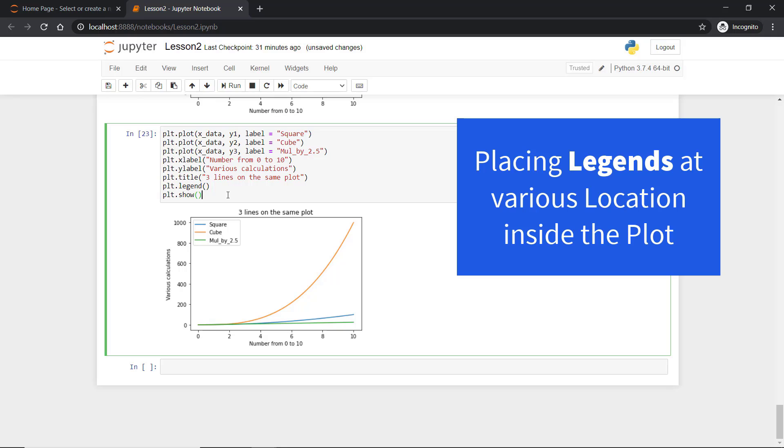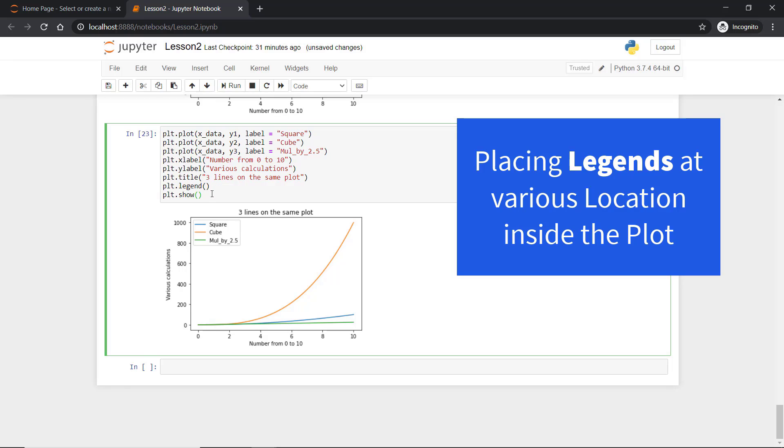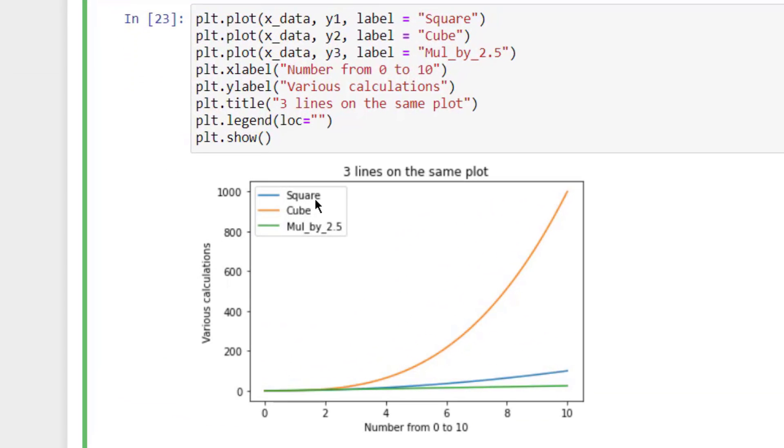Now one more thing that you can do with the legend is you can also change with the position. Let's say I wanted to plot this legend to the center. So we can pass it as a location loc equal to center. Now this legend will be displayed at the center. So we will just execute and we will see the legends are placed at the center.